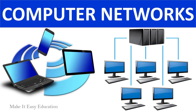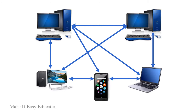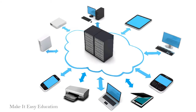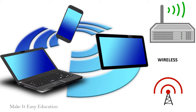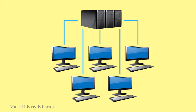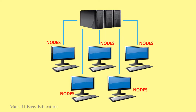Computer networks. A computer network is a set of computers or electronic devices connected together. A computer, printer, scanner, fax machines or a file server can be a part of the network. The connection between these devices can be done with cables, wires or wireless. The purpose of having a computer network is to send and receive data stored in other devices over the network. These devices are often referred to as nodes.